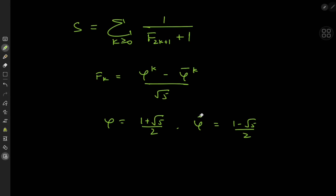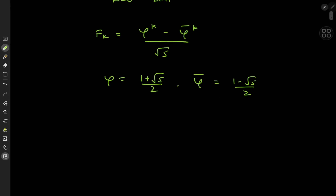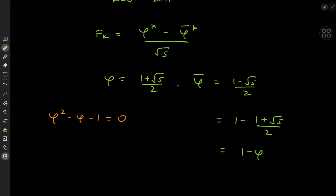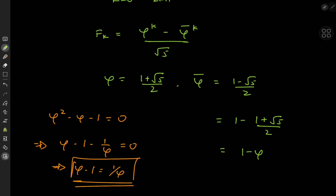It'll be nice to make some algebraic adjustments to the phi-bar term. This can be written as 1 minus (1 + √5)/2, which is of course equal to 1 minus phi. Now the golden ratio satisfies phi² − phi − 1 = 0. Multiplying both sides by 1/phi gives phi − 1 = 1/phi, which means phi-bar can be written as the negative of 1/phi.